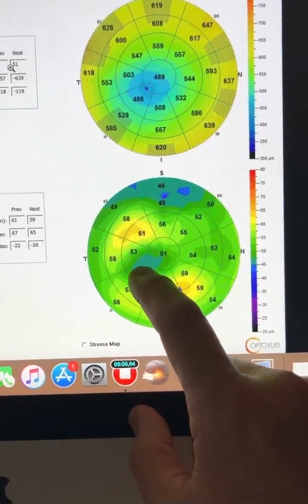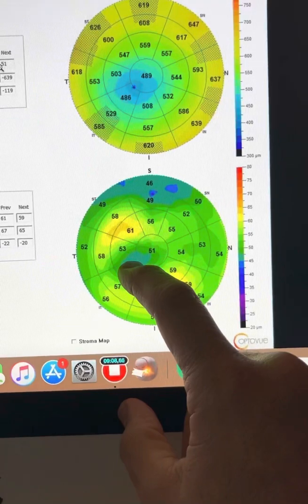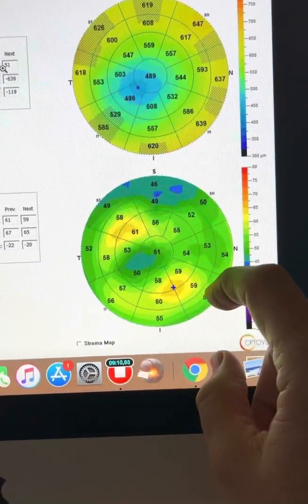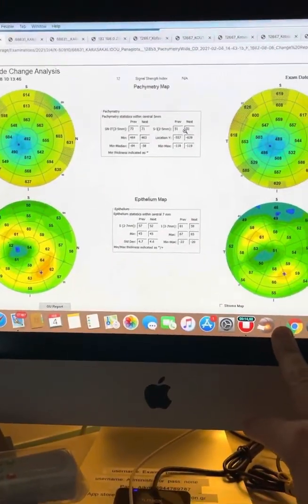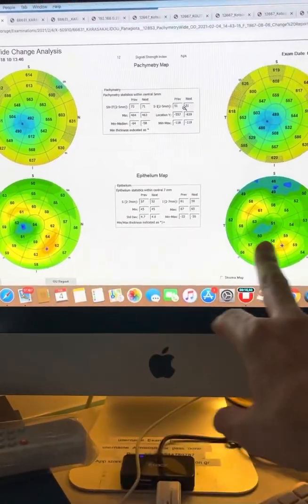We don't see any dark blue at the peak of the cone. We see that the remodeling epithelium around the cone has really stepped back. Let's go back and look at this a little bit more as an overview.